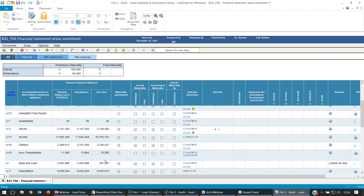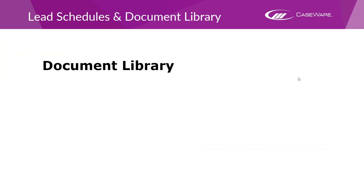Hopefully that was helpful. What we're going to do now is have a look at the document library. You access it by using this symbol — the filing cabinet with the plus button. We've got a poll for this because we're interested to see how many of our users actually use the document library, so if you don't mind spending about 30 seconds completing that, please let us know.